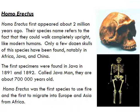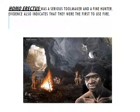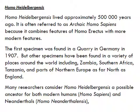Homo erectus first appeared about 2 million years ago. Their species name refers to the fact that they could walk completely upright like modern humans. Only a few dozen skulls of this species have been found, notably in Africa, Java, and China. The first specimens were found in Java in 1891 and 1892, called Java Man, dating to about 700,000 years ago. Homo erectus was the first species to use fire and the first to migrate into Europe and Asia from Africa. They were serious tool makers and fine hunters.